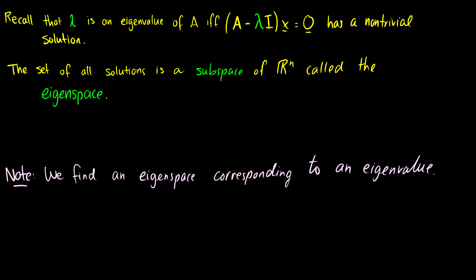Let's recall that lambda is an eigenvalue of A if and only if the equation (A minus lambda I)x equals 0 has a non-trivial solution. The set of all solutions to that is going to be a subspace of R^n, and we're going to call it the eigenspace. So it's really just finding the null space of A minus lambda I.